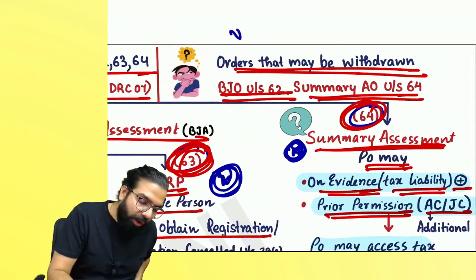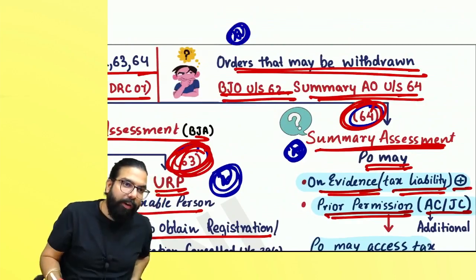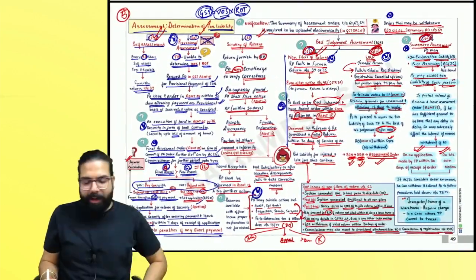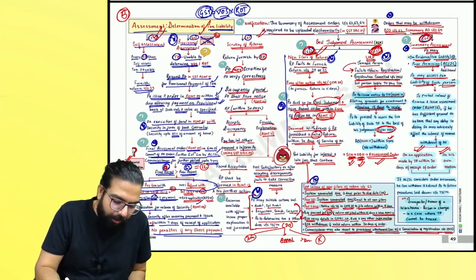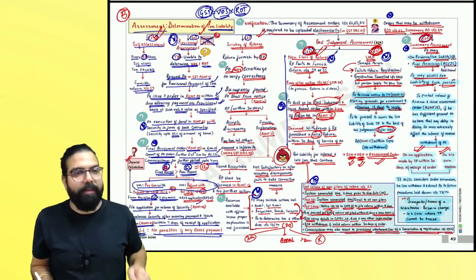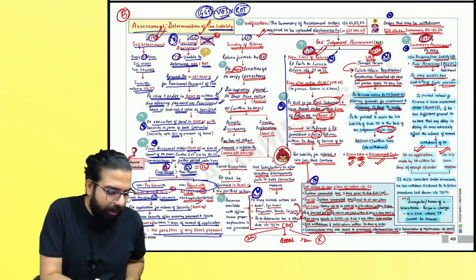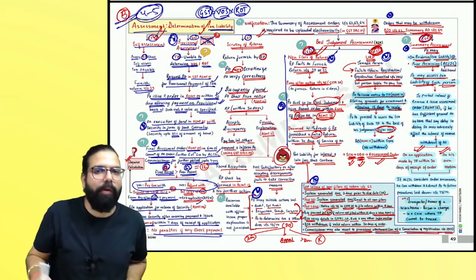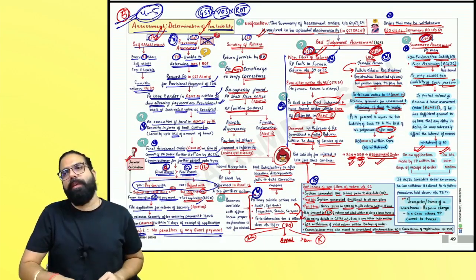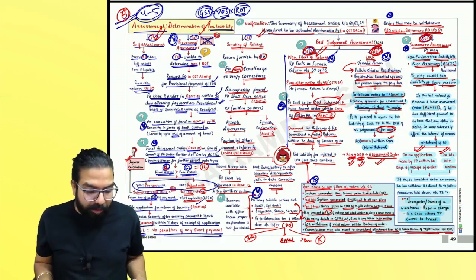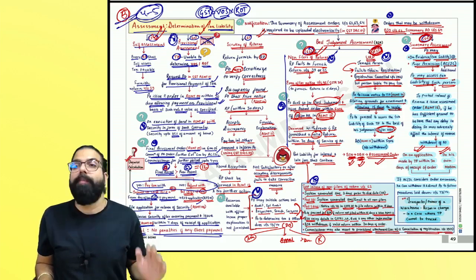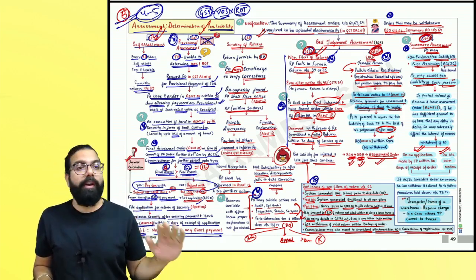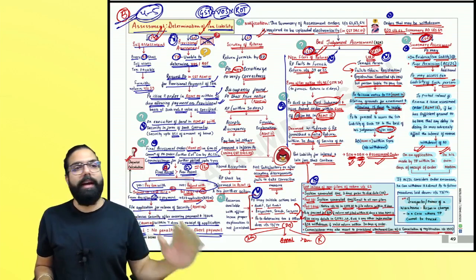They can ask you what orders can be withdrawn. SOPs — till now they have not asked a question, but they can. This is a 4 to 5 mark chapter maximum, and I'll close my revision on the chapter of assessment. Assessment means determination of tax liability.